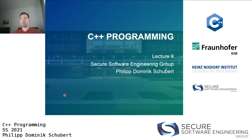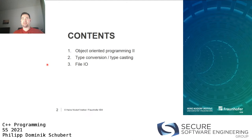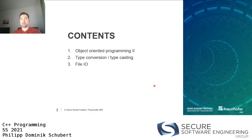Hi everybody! Welcome back to our C++ programming lecture — that's already our 10th lecture. We've made quite some progress so far. Today we're going to discuss the remaining parts of object-oriented programming, that is the second part. We'll also talk about type conversion and typecasting in the context of OOP, and the major block for today is File I/O — how you can read and write data to or from a file, which comes in quite handy in real-world applications.